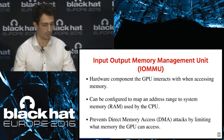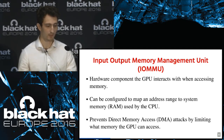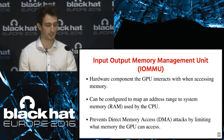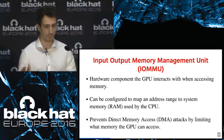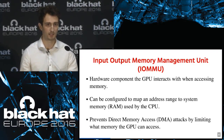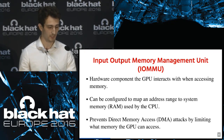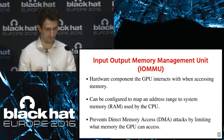Now we'll discuss what the IOMMU is — the input-output memory management unit — and it's very similar to the MMU. The IOMMU is a hardware component the GPU interacts with when accessing memory. It can be configured to map an address range to system memory, which can be used by the CPU. Note that IOMMU is not something specific to the GPU — there could be multiple IOMMUs on a motherboard, for instance. In this case, we're discussing the GPU's IOMMU, which is responsible for preventing direct memory attacks by limiting what memory the hardware can interact with.